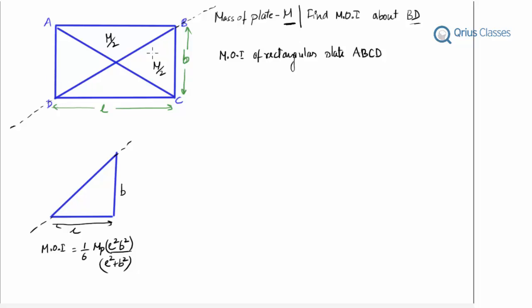Hi, I'm Akshay and in this part we're going to solve a problem of rotational motion. The question says that we have a rectangular plate, and the mass of that plate is given as capital M. We have to find the moment of inertia of this rectangular plate about BD, BD being one of the diagonals of this rectangular plate.